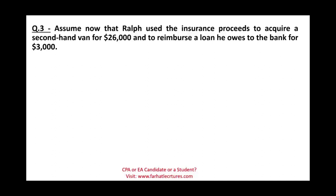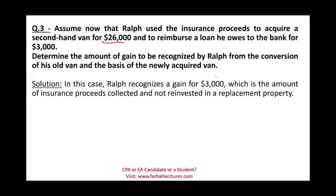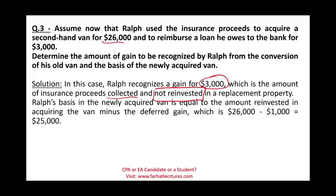Now assume Rolf used the insurance proceeds to acquire a second-hand van for $26,000 and to reimburse a loan to the bank for $3,000. Rolf would recognize a gain of $3,000 — the amount of insurance proceeds collected and not invested in the replacement property, since he used it to pay off the loan. Rolf's basis in the new property equals $26,000 minus the deferred gain of $1,000, giving a basis of $25,000.